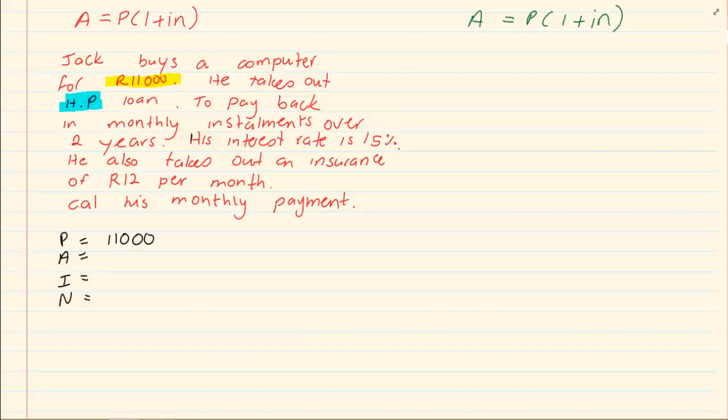Then they continue to say that he is going to pay back in monthly instalments over 2 years. The 2 is giving us the N. His interest rate is 15% per annum. Now when they are saying 15% per annum it means that our I is 15 over 100.